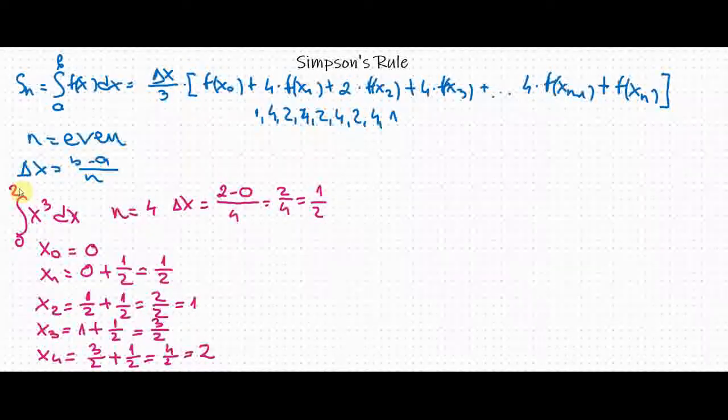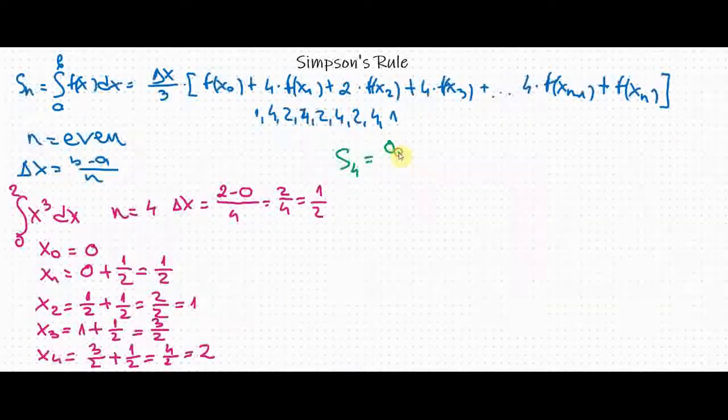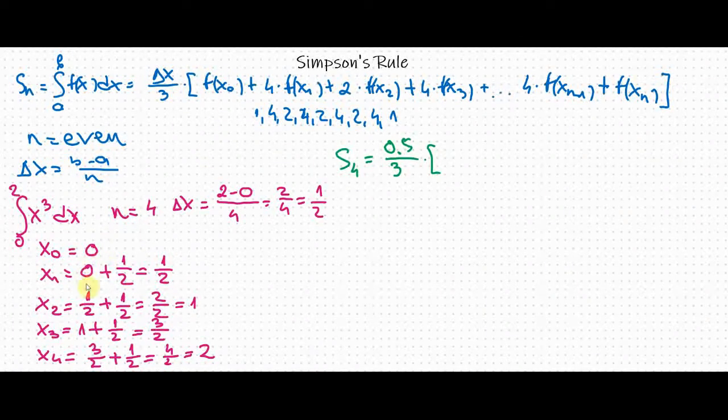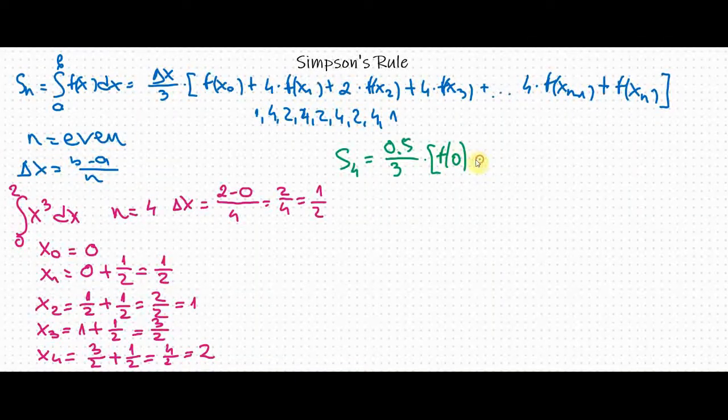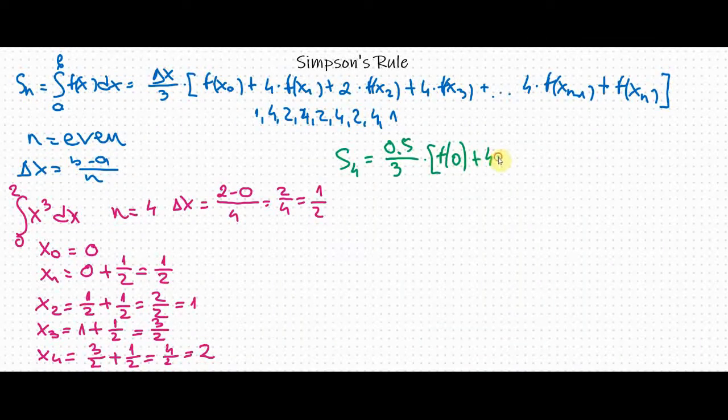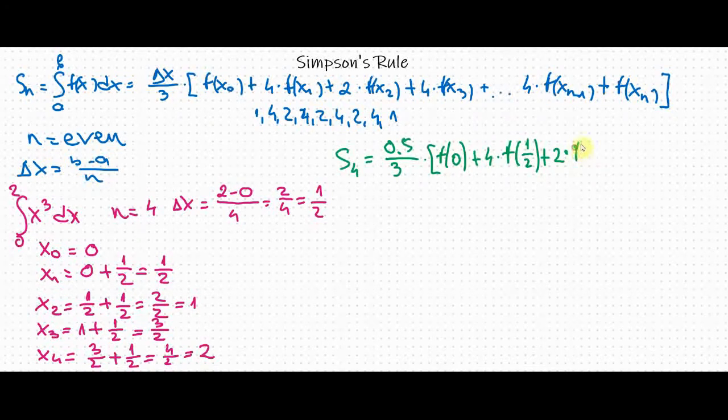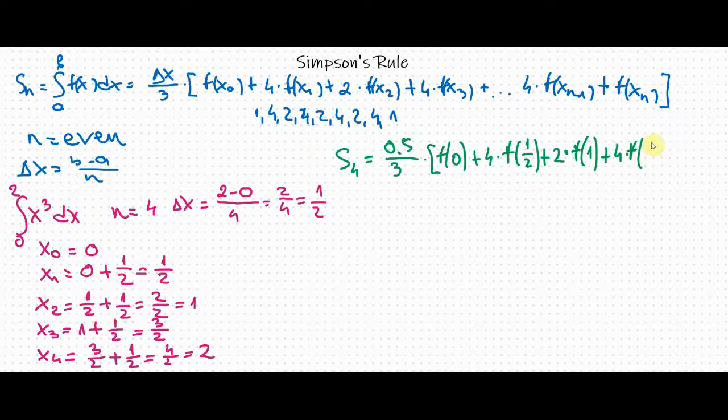So our integral will be approximated like this. We have s sub 4 equals delta x over 3. For delta x we have 1 half or 0.5 over 3. And then I will just plug these numbers: 0, 1 half, 1, 3 halves and 2. So we have f of 0 plus 4 times f of 1 half plus 2 times f of 1 plus 4 times f of 3 over 2 plus f of 2.